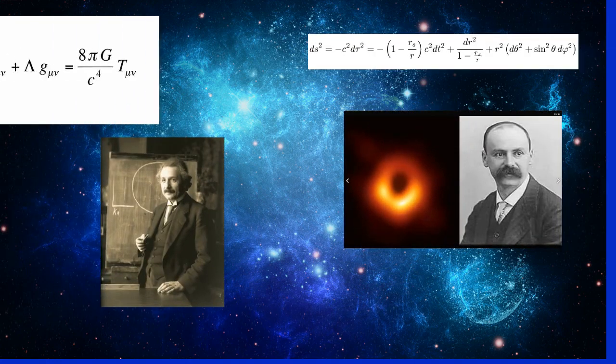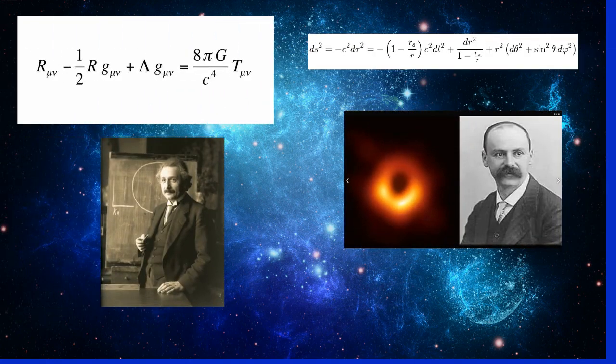The black hole solution was discovered by Karl Schwarzschild, who realized that Einstein's equations have a solution under the spherically symmetric assumption. In his solution, it can be noticed that the event horizon scale emerges naturally. At the event horizon scale, gravity becomes really strong.